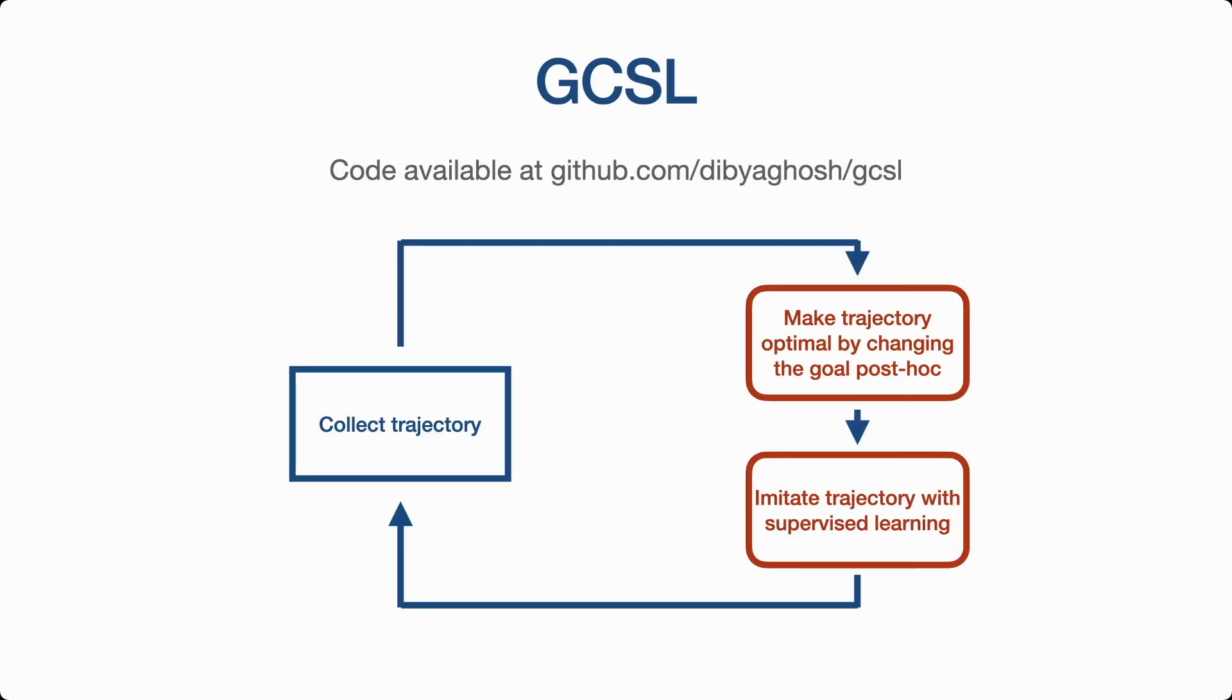To summarize, in this talk we presented GCSL, an algorithm for learning to reach goals that uses supervised learning to learn a policy. Since GCSL uses supervised learning to learn this policy, the algorithm is very simple, easy to implement, and robust to the choice of hyperparameters. If you're interested in learning more, please check out our paper, our code base, or join us at the poster session. Thank you.